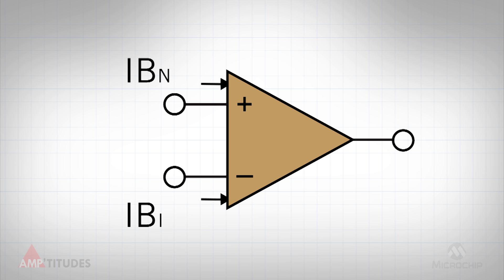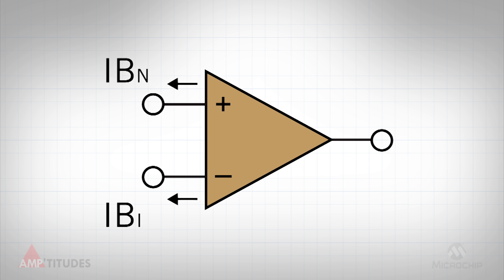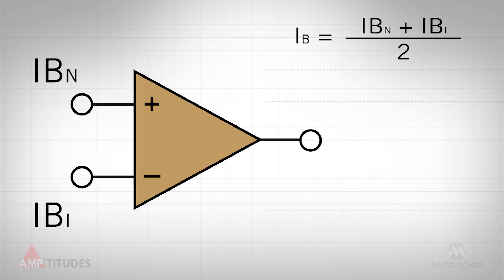Convention dictates that for input leakage, a current into the device is positive, and current out of the device is negative. Input bias current is defined as the average of the currents into the two input terminals of an amplifier. Input offset current is defined as the difference between the currents into the two input terminals of an amplifier.